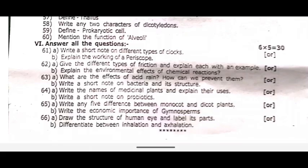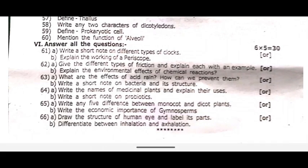Sixty-five, write any five differences between monocot and dicot plants. Write the economic importance of gymnosperms. Sixty-six, draw the structure of the human eye and label its parts. Differentiate between inhalation and exhalation.